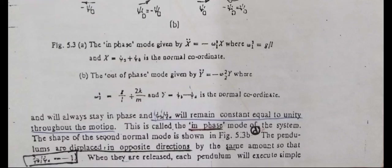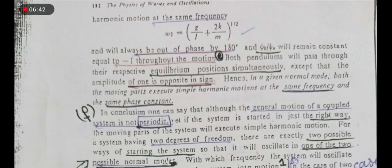This is called the in-phase mode of the system. For the shape of the second mode (point d): the pendulums are displaced in opposite directions by the same amount so that psi_b over psi_a is equal to minus 1۔ کیونکہ یہ دونوں opposite directions میں ہیں، displacement کی ratio equal to minus 1 ہوگی۔ When they are released, each pendulum will execute simple harmonic motion at the same frequency: omega_2 is equal to (g over l plus 2k over m) raised to power 1/2, and will always be out of phase by 180 degrees۔ ان کی ratio remains constant equal to minus 1 throughout the motion۔